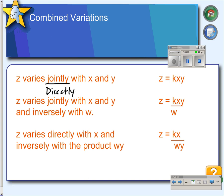Jointly is a word that means directly for two or more variables. Since Z varies directly with X, and Z also varies directly with Y, we say Z varies jointly with X and Y, and the equation would look like this. Notice you still have a K, or a constant term.